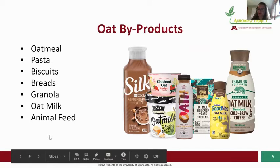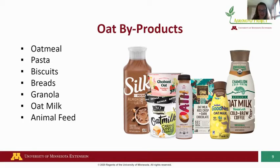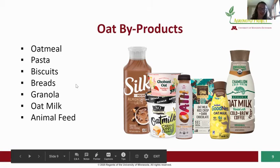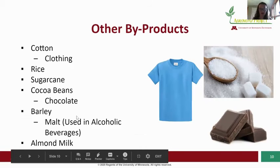Next is oats. Products made from oats include the most widely known — oatmeal — as well as pasta, biscuits, breads, granola bars, and oat milk. Oats are also commonly used as animal feed for horses or cows. You'll notice that many crops can be made into milk, whether that's soy milk or oat milk. Some other byproducts include cotton for clothing, rice, sugar, and chocolate made from cocoa beans.